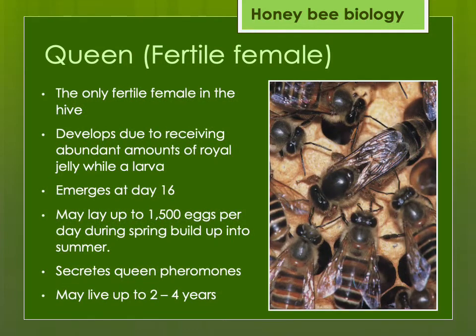The queen is the only fertile female within the hive. Even though the egg she developed from potentially could have been a worker egg, she developed into a queen due to differences in how the workers treated her — they fed her much greater amounts of a secretion called royal jelly while she was a larva. She emerges much earlier than any other type of bee, at day 16. When mated and laying, she will lay up to 1,500 eggs per day in the springtime through early summer. She secretes chemicals called pheromones, which help the bees recognize her as queen and help the colony stay together as a functioning colony. She can live up to two to four years.